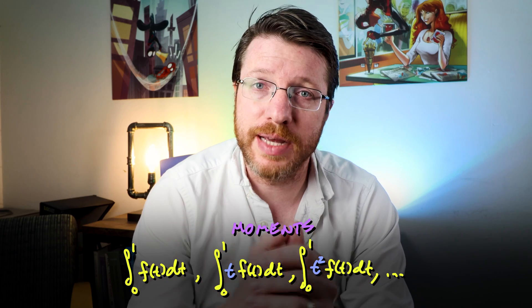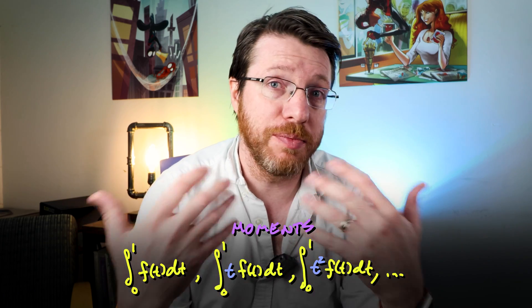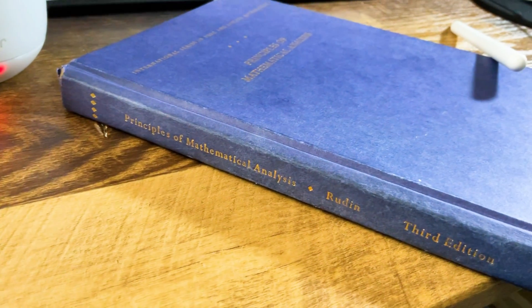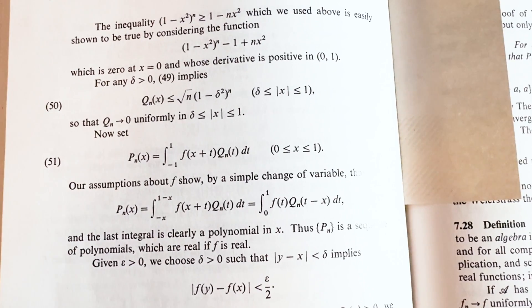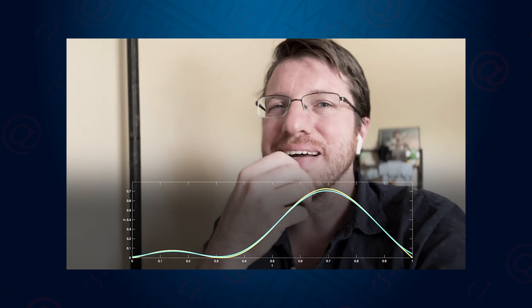Moments come up all the time in statistics, physics, and many other places, so this is a very common and important problem. We've actually seen a resolution to this same problem — getting a polynomial approximation using moments — when I showed you the Weierstrass approximation theorem. But while that proof is constructive, it's actually a very bad way of using the data. We can do better, and that's what this Hilbert space method is supposed to do.